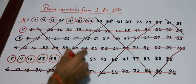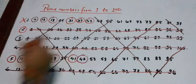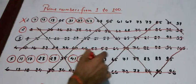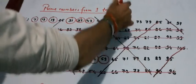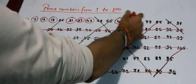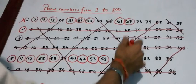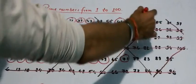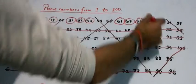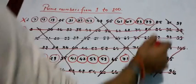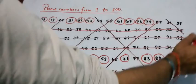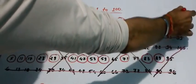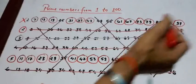Okay, 41, 47, 53, 59, 61, 67, 71, 73, 79, 83, 89 and 97.